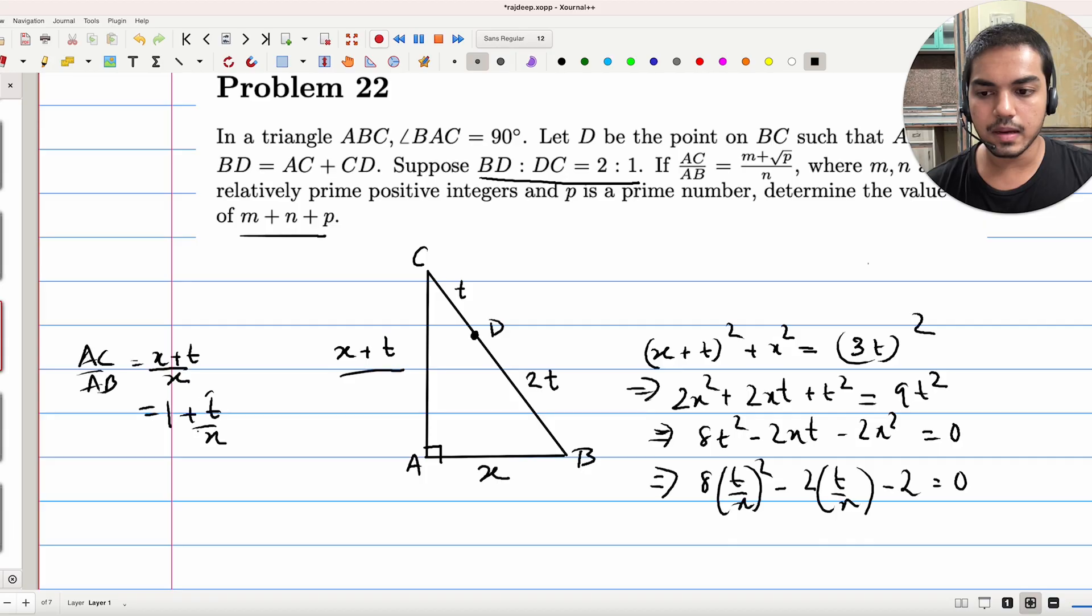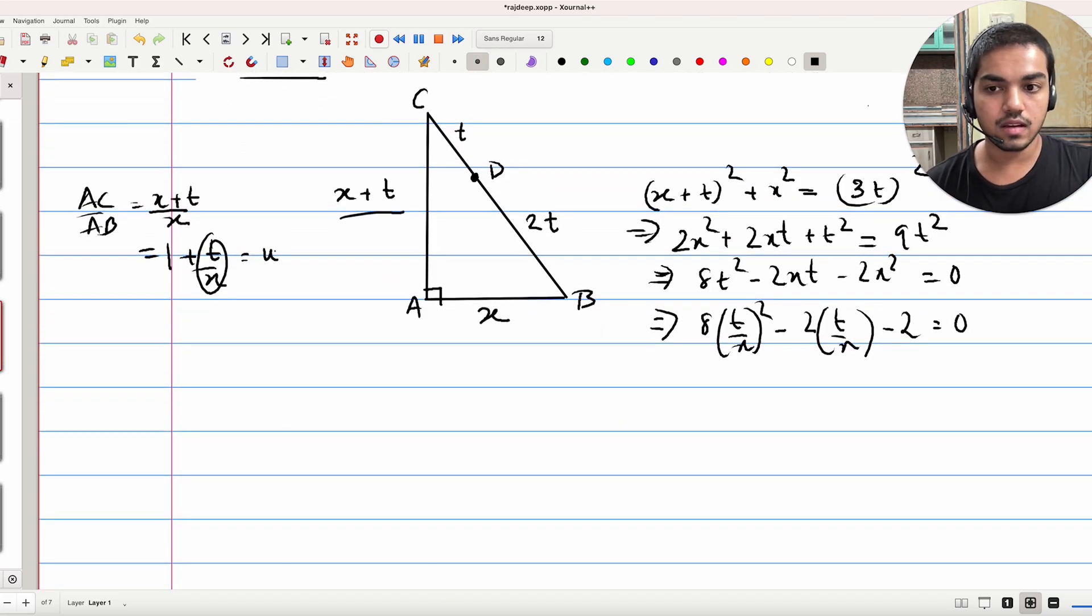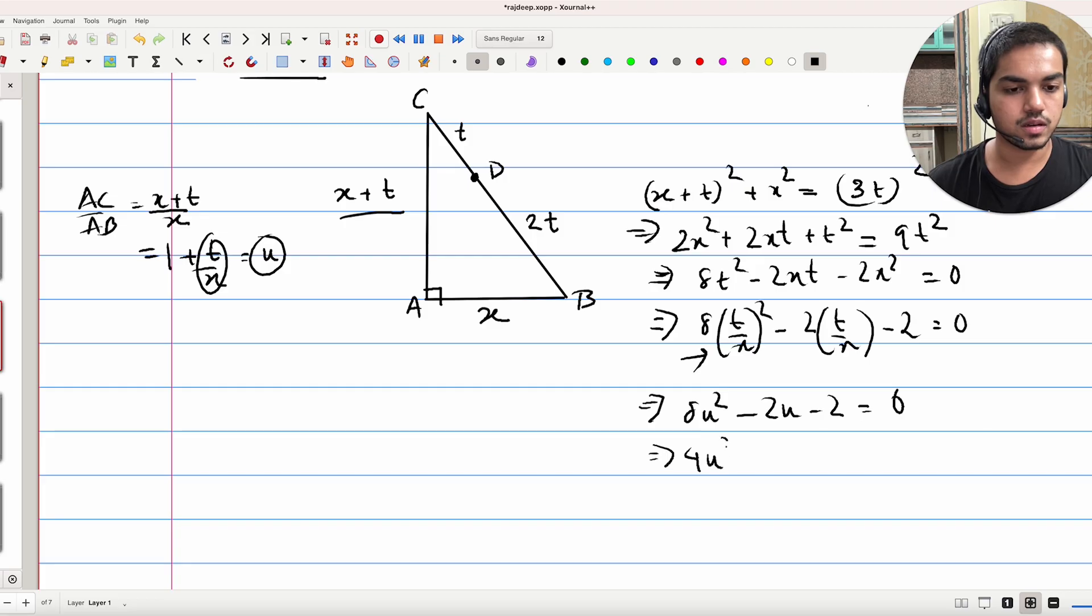Now if I let T by X equals U, all I want to know is what is the value of 1 plus U. Right? And if I can find the value of U from here, I'll be done. But this is just a quadratic. So if I write this as 8U square minus 2U minus 2, which is just 4U square minus U minus 1 is 0.